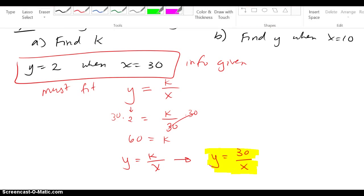So part A, we have answered K equals 60. Part B, it says find Y when X is 10, so Y equals K over X and we already know K is 60. So to find Y, all I got to do is put the value of 10, which gives us Y equals 6.